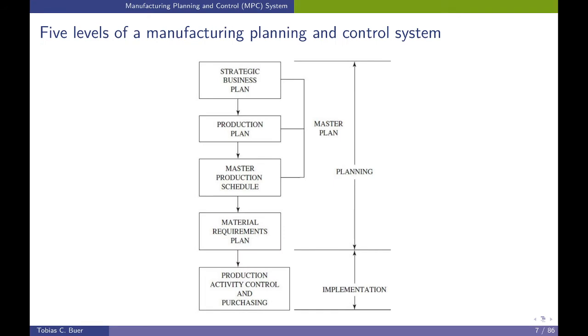Let's have a look at the manufacturing planning and control system — the MPC system. We typically distinguish five levels. The first four levels are related to planning, and the fifth level is related to implementation. Plans are made from the top to the bottom: starting with the strategic business plan, followed by the production plan, the master production schedule, the material requirements plan, and then implementation with production activity control and purchasing.